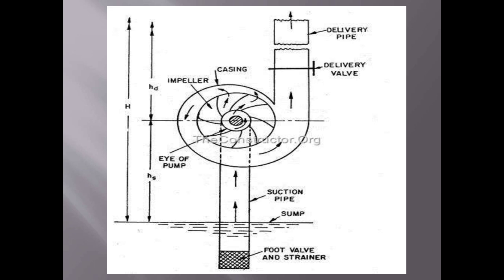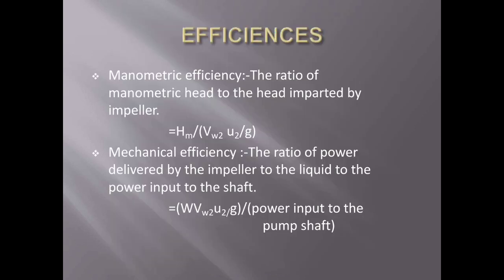Mechanical efficiency, second type. The ratio of power delivered by the impeller to the liquid to the power input to the shaft. Last one is the overall efficiency. Ratio of power output of the pump to the power input to the pump or shaft. This is the overall efficiency.